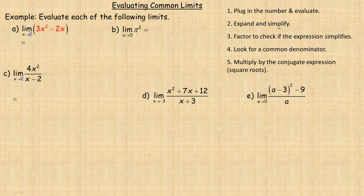Sometimes you need to expand and simplify an expression because you might be getting a zero over zero, called an indeterminate form. Zero divided by zero doesn't necessarily equal one like any other number divided by itself. You need to sometimes factor and see if the expression will simplify, then evaluate the limit. Sometimes you need to find a common denominator, or try multiplying by a conjugate expression.